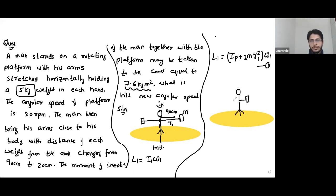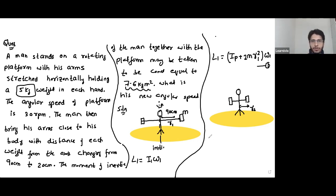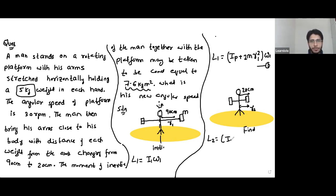Finally, when this man folds his arms, the radius changes to R2. The separation of the masses from the axis of rotation is R2. So the final angular momentum will be: the moment of inertia of the platform — which is not changing — plus twice of mass, multiplied by R2 squared, multiplied by omega 2. That is the equation.